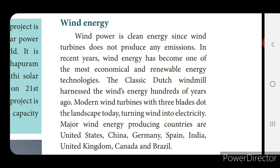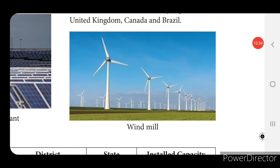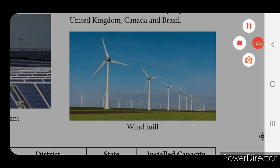Major wind energy producing countries are United States, China, Germany, Spain, India, United Kingdom, Canada and Brazil. These windmills are very high, and with the speed of the wind they rotate — we call that turbines. By means of rotation, kinetic energy produces electricity.